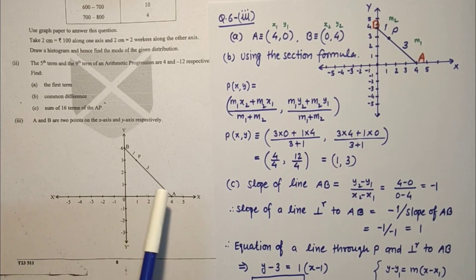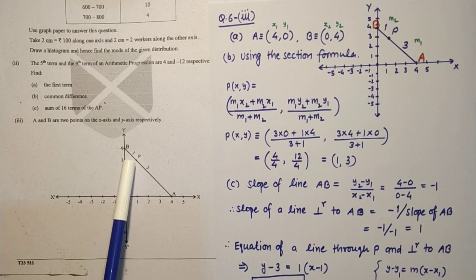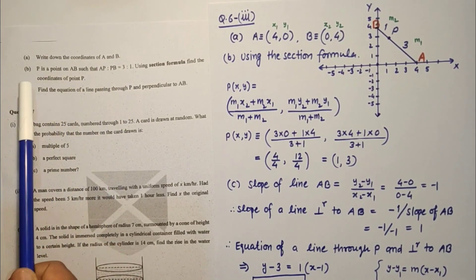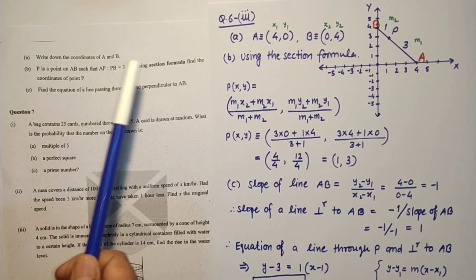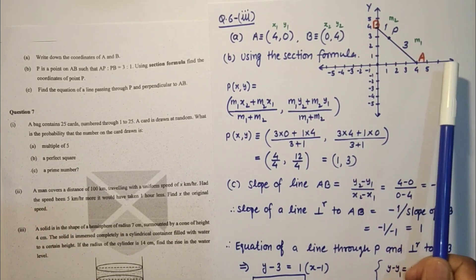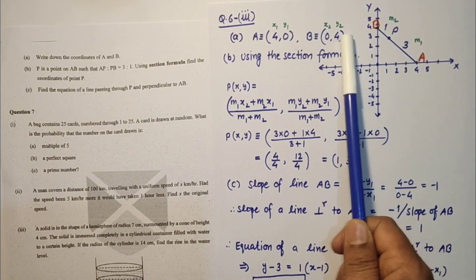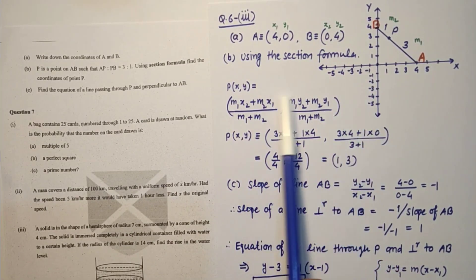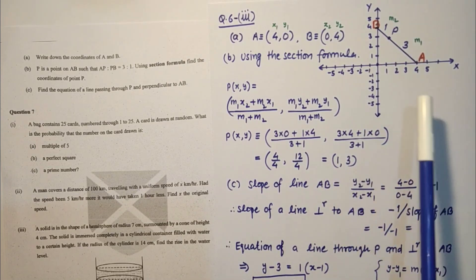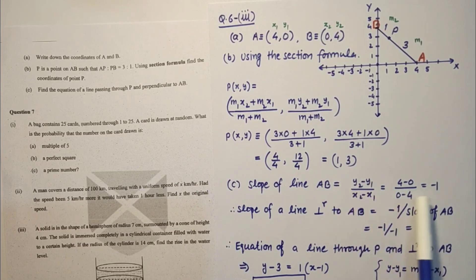Question number 6 third sub part. This is given, A here, B here, P is a point on AB segment. Ratio AP to PB is 3 is to 1. We have to find the coordinates of A and B, coordinates of P, and equation of a line passing through P and perpendicular to AB. Coordinates of A is 4,0 and B is 0,4. Using the section formula, we found point P coordinates as 1,3.